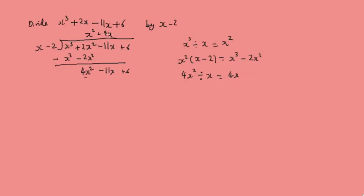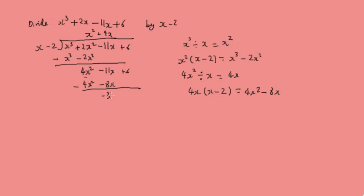We take 4x and multiply it by the divisor, which gives us 4x² minus 8x. We write that below and subtract. The x² terms cancel, leaving us with minus 3x plus 6, where the 6 just falls down.